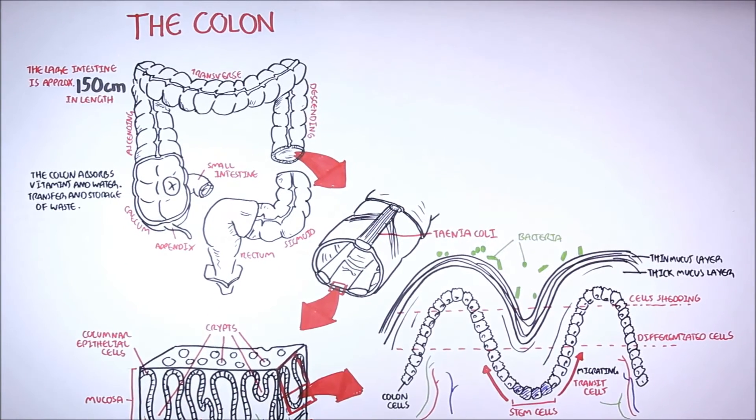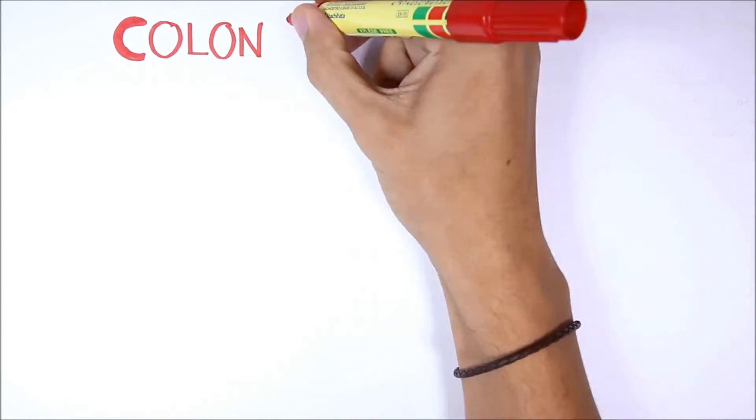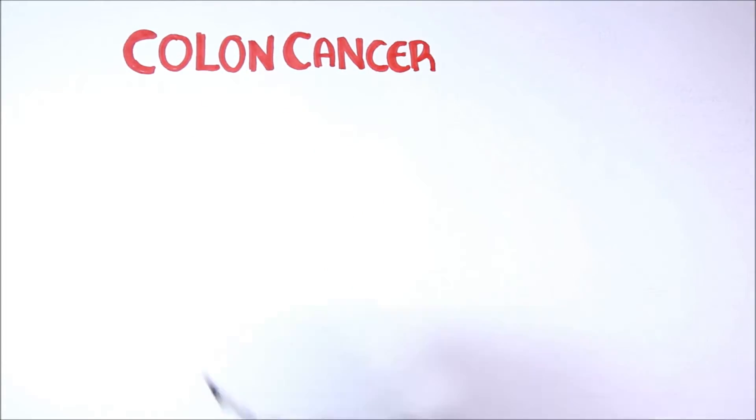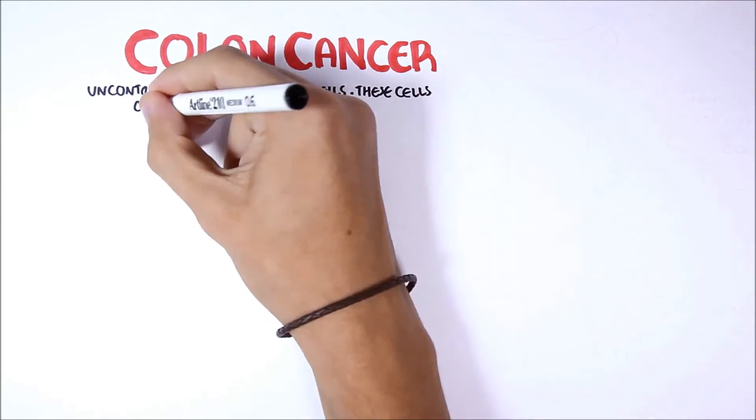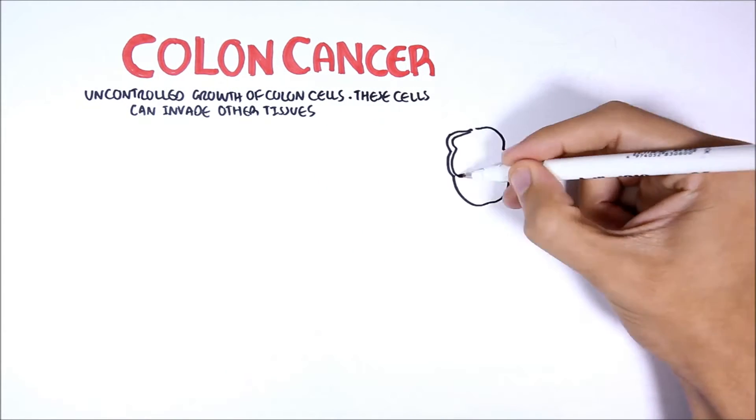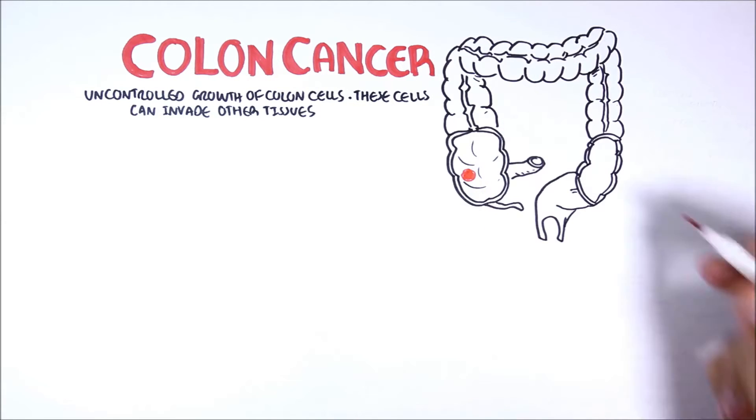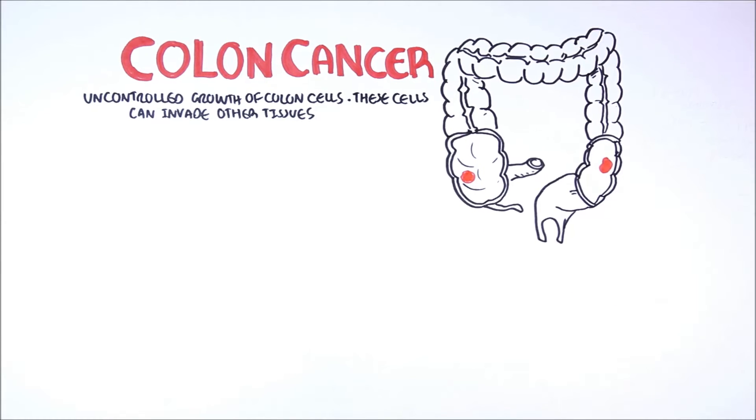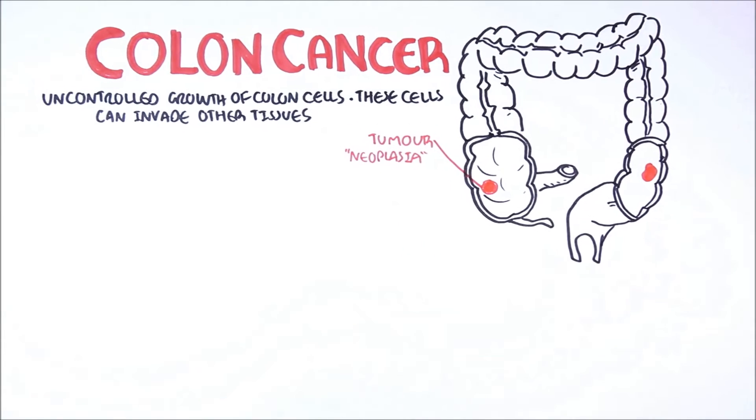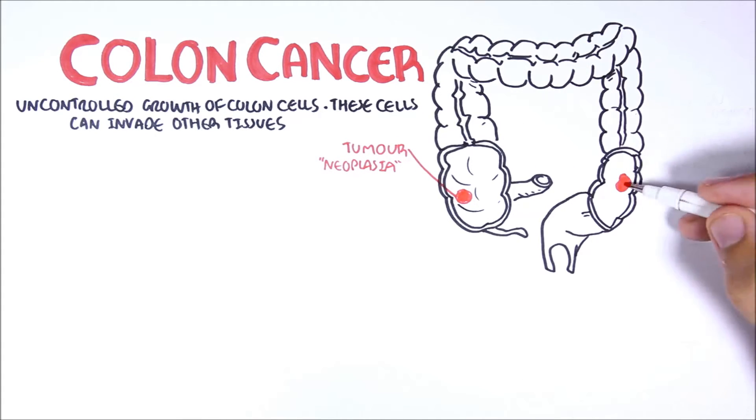Now that we have a better understanding of the colon, let us focus on colon cancer. Colon cancer is where there is uncontrolled growth of colon cells, and these cells can later invade other tissues. Here we have a colon. These red mushy looking things are tumors. Tumors are abnormal growths. Neoplasia is another word that is used interchangeably with tumor. Neoplasia essentially means new growth.